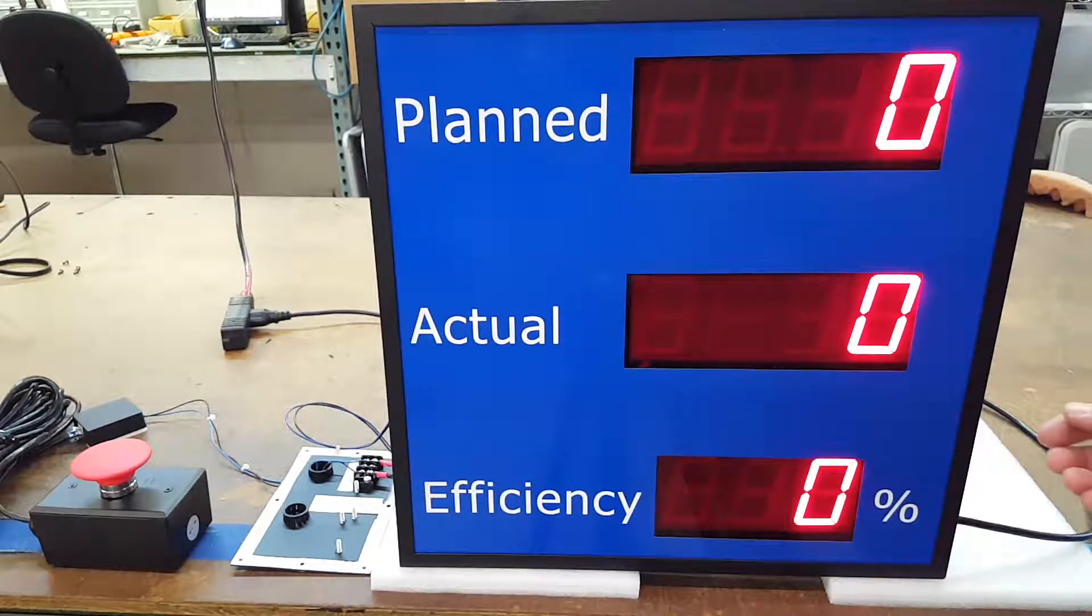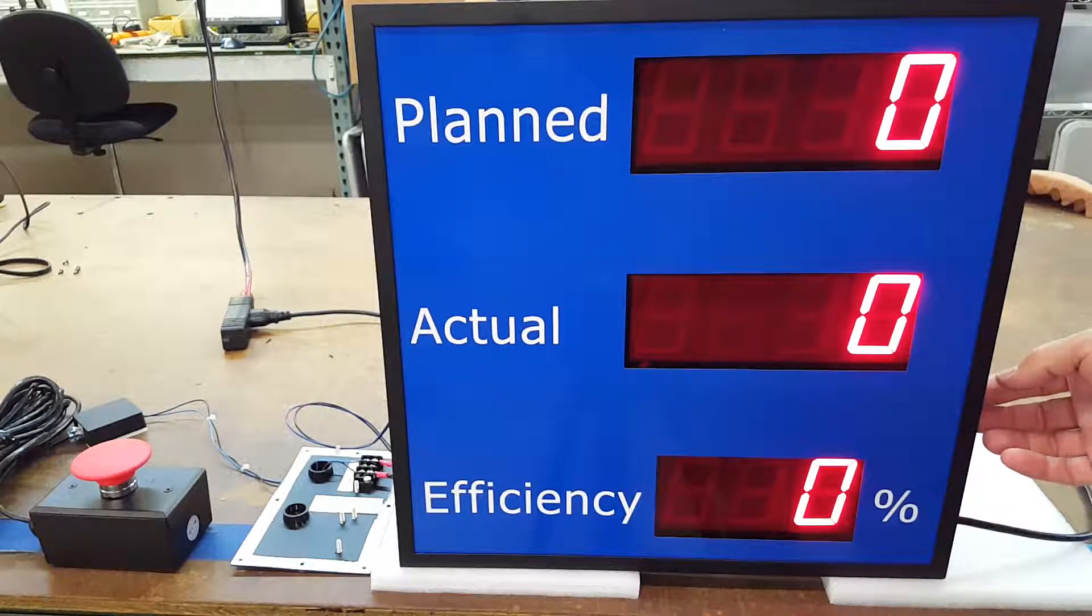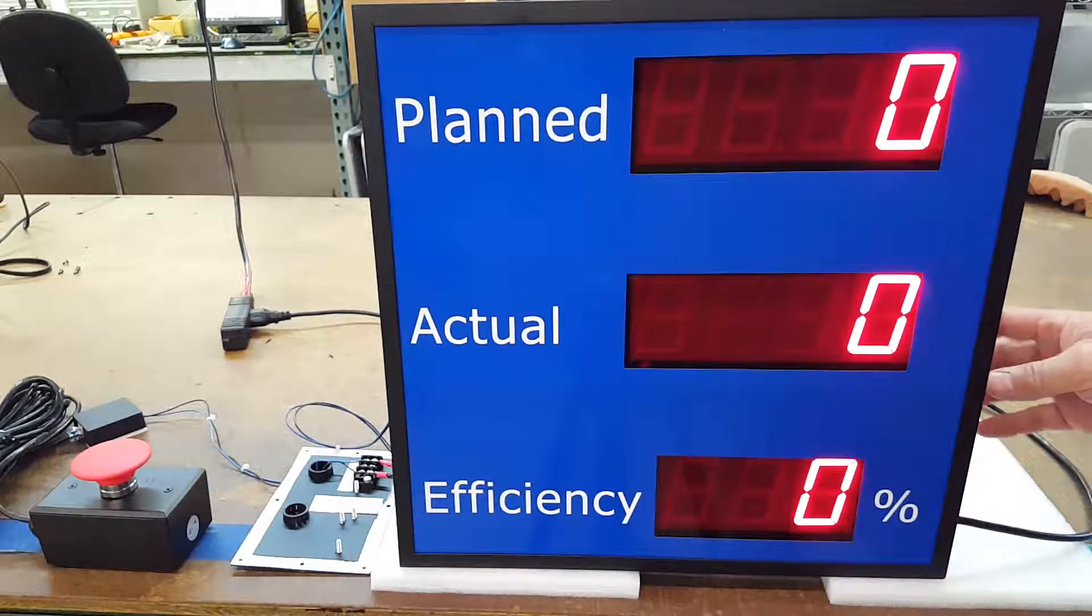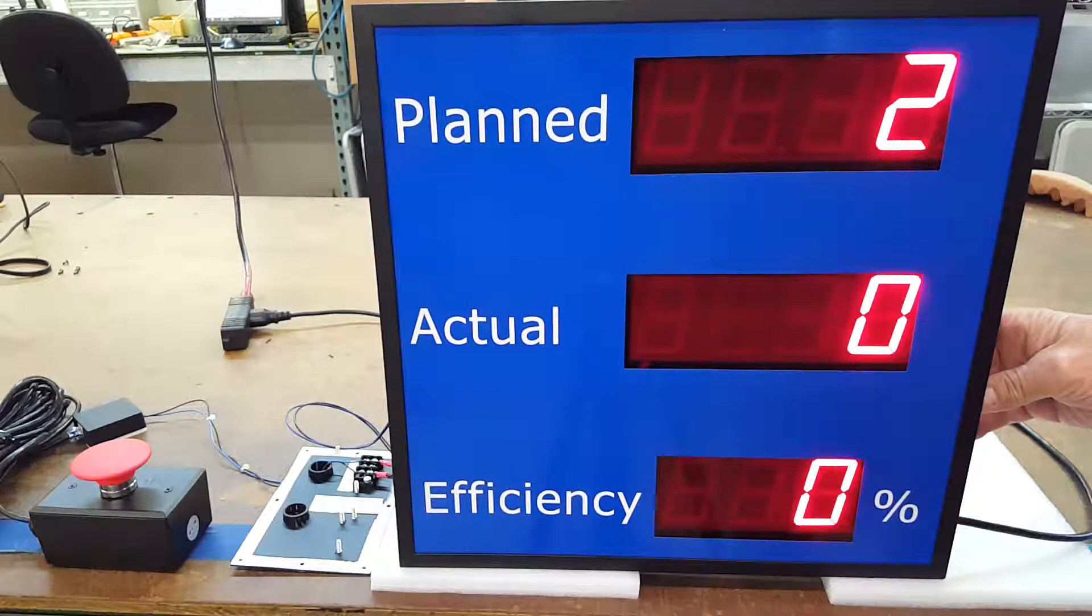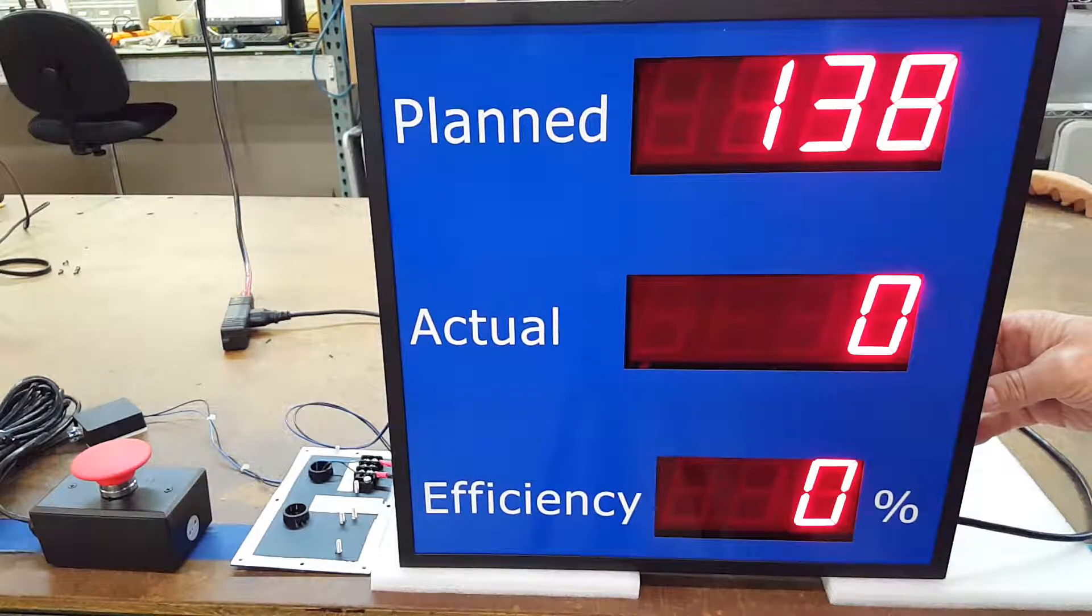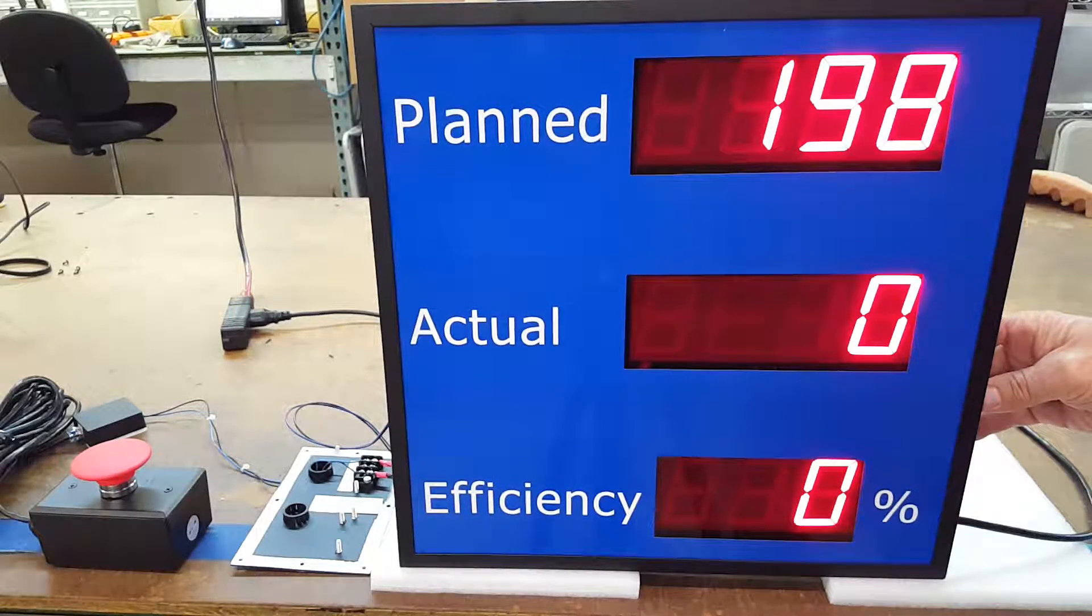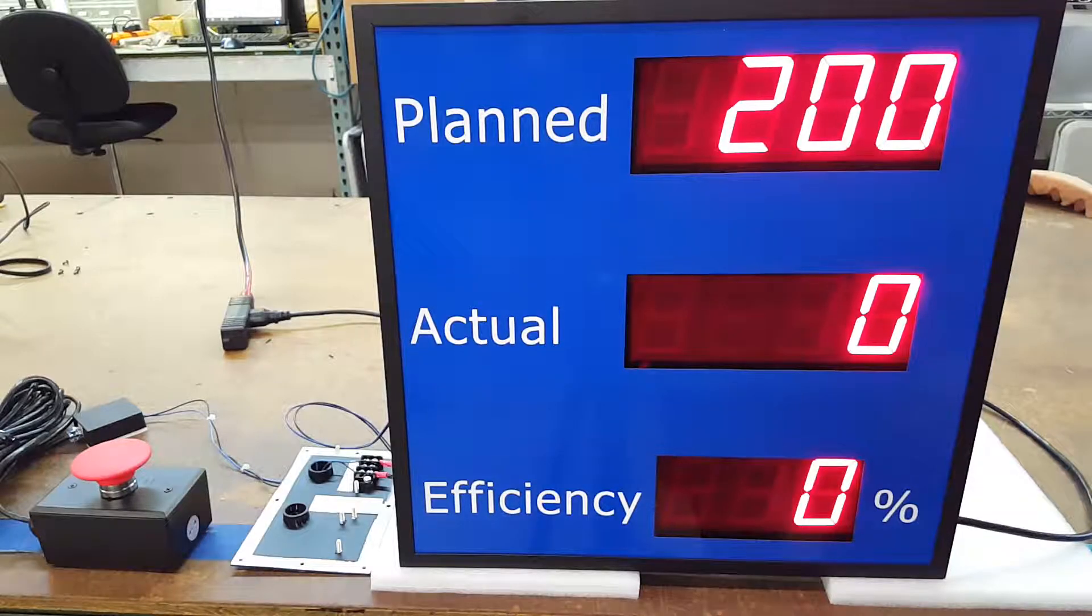The planned value is set with these environmentally sealed switches located on the right side. I'm going to set it for 200. As you hold it, it gets faster, which makes it easy to set. You can also do individual presses. I'm going to set that for 200.